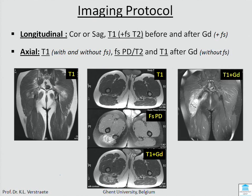What images do you need? You always need longitudinal images — coronal or sagittal — T1. Then we take T1 fat-suppressed, proton density, and T1 plus gadolinium axial slices, and then we do post-contrast. You should always have one with and without fat suppression before contrast and one with and without fat suppression after contrast.